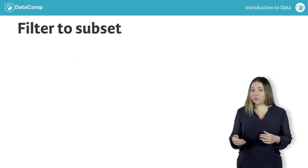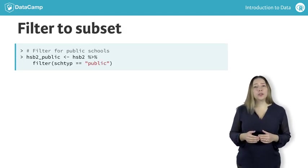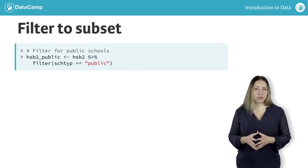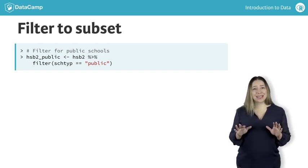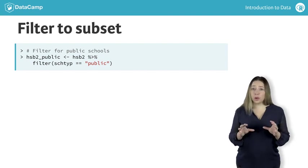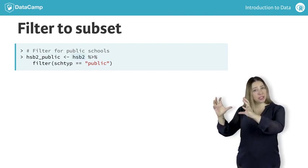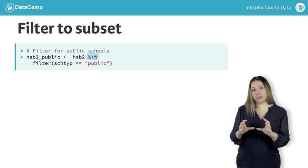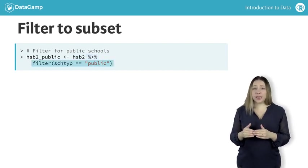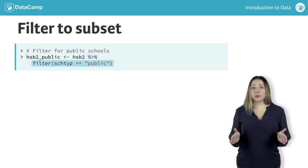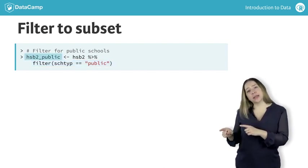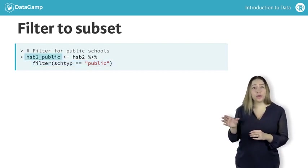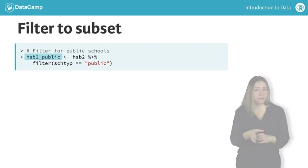We can use the filter function in the dplyr package to obtain a subset of public school students. Let's pause for a moment and dissect these two lines of code. We can read this as: take the hsb2 data frame and pipe it into the filter function, filter the data for cases where school type is equal to public, then assign the resulting data frame to a new object called hsb2_public.